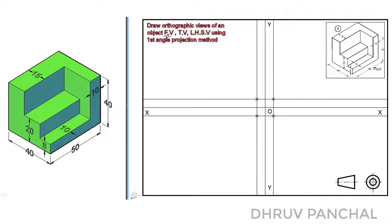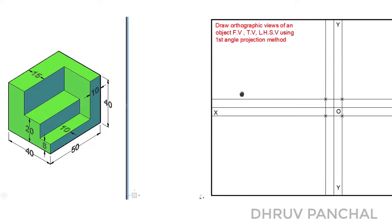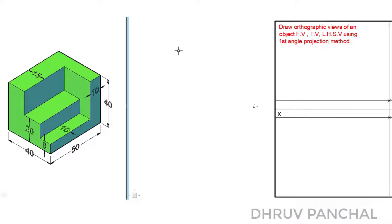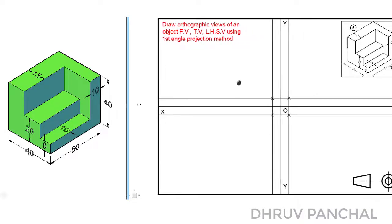As per the given data, we have to draw a front view, top view, and left hand side view using first angle projection method. In the case of first angle projection, we draw the front view in the first quadrant, the top view below the front view, and the left hand side view to the right of the front view. We will consider this as our first, second, third, and fourth quadrant and draw the front view accordingly, so that there will be space for the top view as well as the left hand side view.